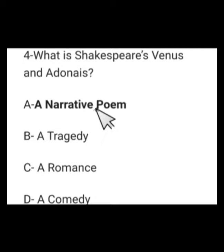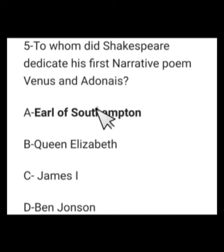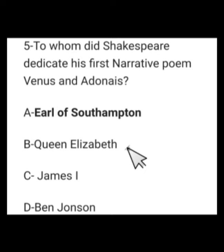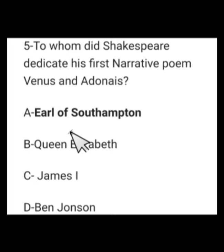Number 5: To whom did Shakespeare dedicate his first narrative poem, Venus and Adonis? Options: Earl of Southampton, Queen Elizabeth, James I, or Ben Jonson. The right option is A. The correct name of this person was Henry Wriothesley, 3rd Earl of Southampton.